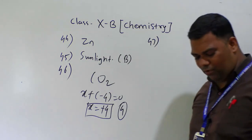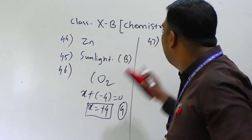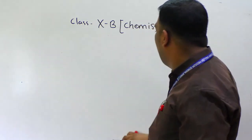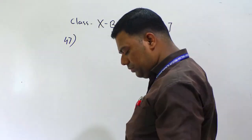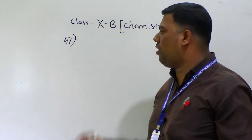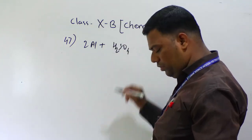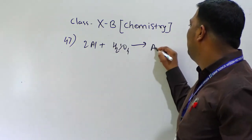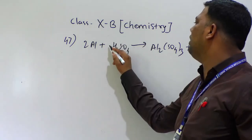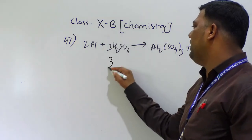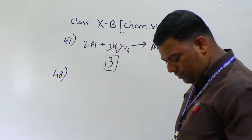Question number 47: in the given equation x stands for — with the reaction 2Al + x H₂SO₄ gives Al₂(SO₄)₃ + 3H₂. To balance this reaction, x must be 3. The reaction is balanced so you have to type only the numeral 3.